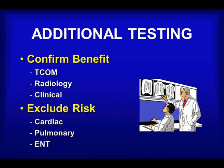Following the basic history and physical assessment, further testing may be considered. This may include assessment to confirm the benefits, such as transcutaneous oximetry, MRI or MRA, bone scans and x-rays, as well as wound assessment. It may also include tests to exclude or mitigate patient risks, such as ECG, cardiac ultrasound, chest x-rays, lung function assessment, tympanometry and audiometry.